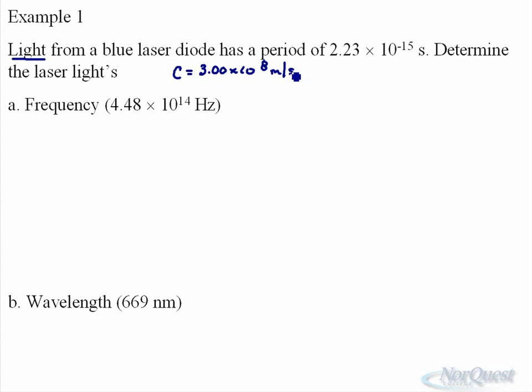So what we want to do is determine the frequency. Well, the first thing we know is its velocity. I just finished talking about it: 3.00 times 10 to the 8 meters per second. I also know the period, which we use as capital T, and that's 2.23 times 10 to the negative 15 seconds. If we want frequency, we're going to use this formula: T equals 1 over f.